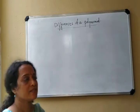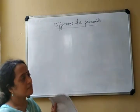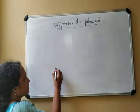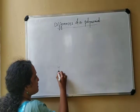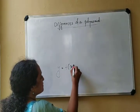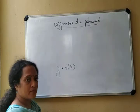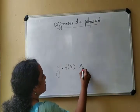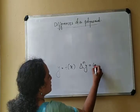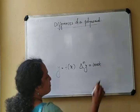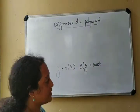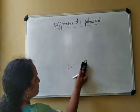In this class we can see the differences of a polynomial. We have seen in the last class that if y equals f(x) is a polynomial of nth degree, then its nth order difference Δⁿy will be a constant. Today we can prove this relation using a polynomial.